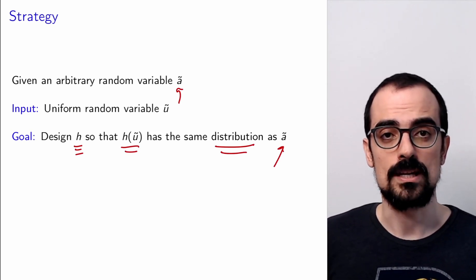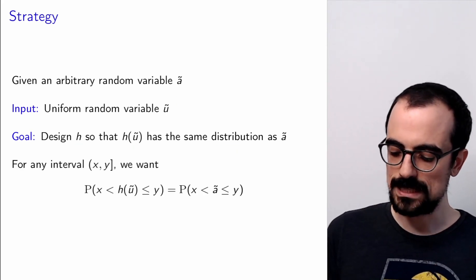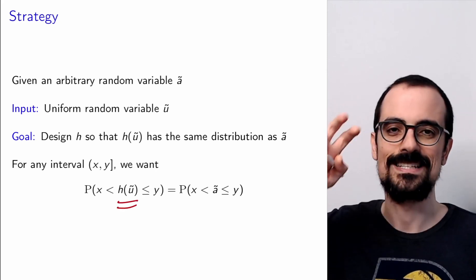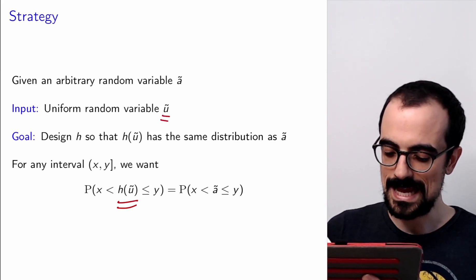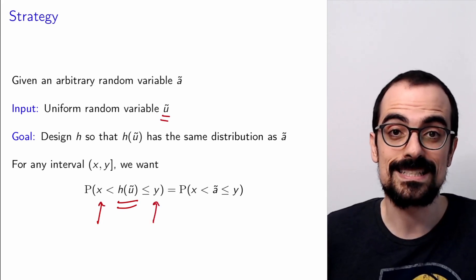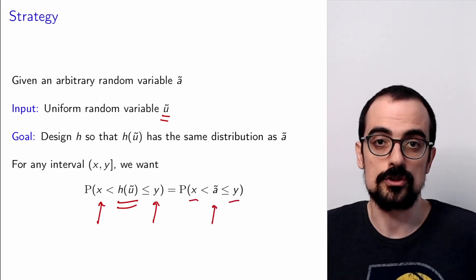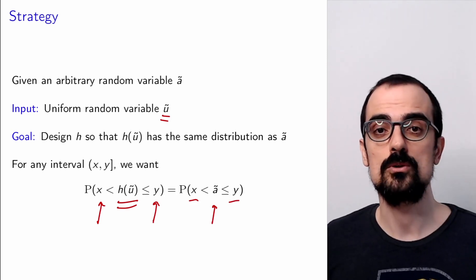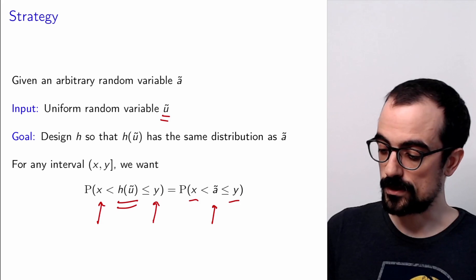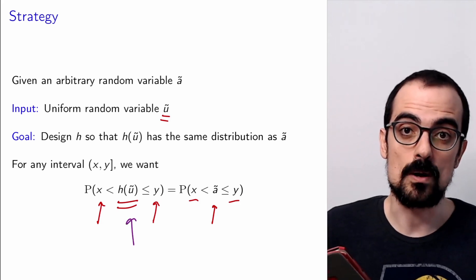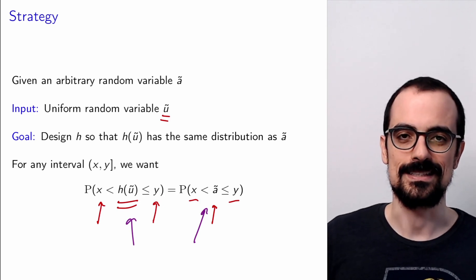Let's be more precise about what we mean by having the same distribution. We mean that for any two numbers x and y, the probability that h(U) is between x and y should be exactly equal to the probability that A is between x and y. For continuous random variables, we reason in terms of probabilities over intervals. If this simulated random variable has the same probability of belonging to any interval as A, then they have the same distribution.